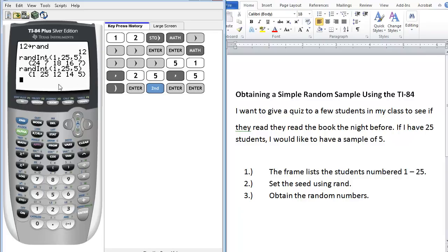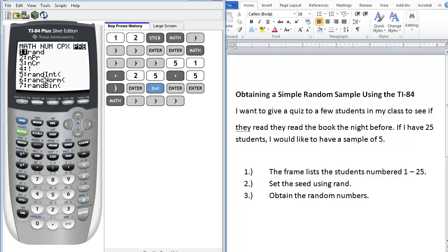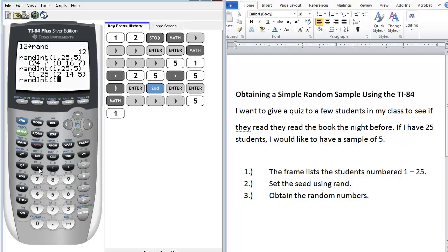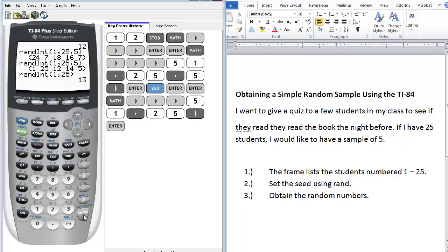If I just wanted to get one more number, we can go to math, go to PRB, random integer. We're starting with 1, ending with 25. If you don't enter a number at the end, then it just lists one number at a time.